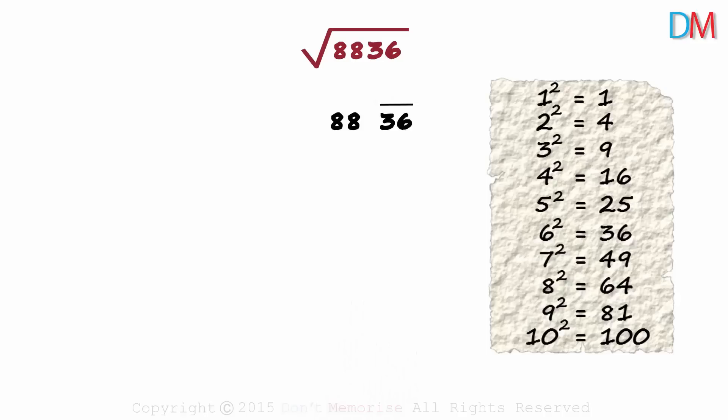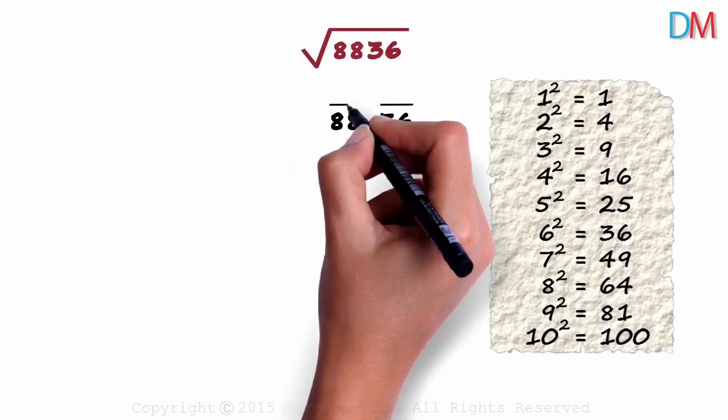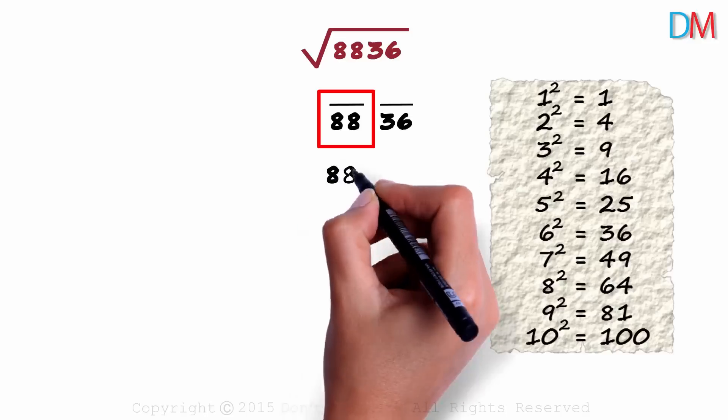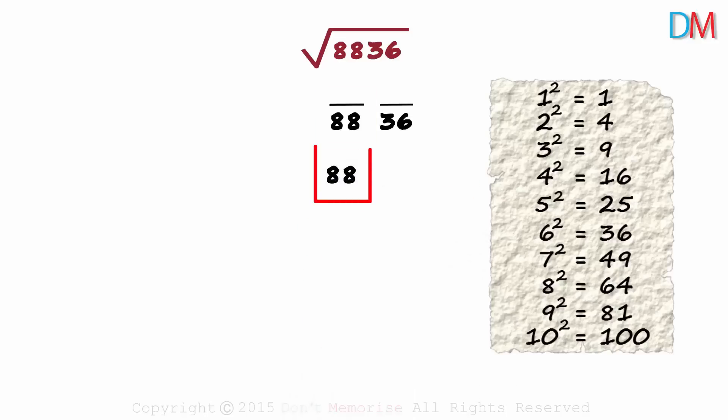We draw a bar over 2 digits from the right and then draw one over the remaining digits. This part gives us the 10th digit. The number 88 will give us the 10th digit. Where does 88 lie in the squares column? It lies between 81 and 100.